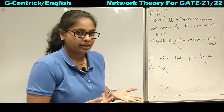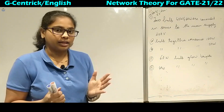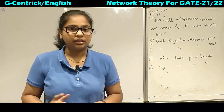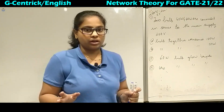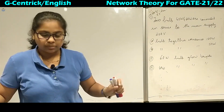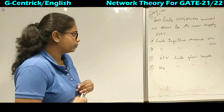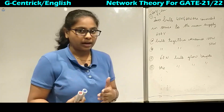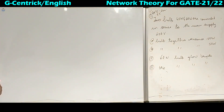In our home appliances, whatever bulbs we use are connected in parallel — that is the practical application. We never connect bulbs in series, because if one bulb goes out, all the series-connected bulbs will stop glowing. That is why we use parallel connection. First we will understand the concept behind parallel connection, then move on to series connection.